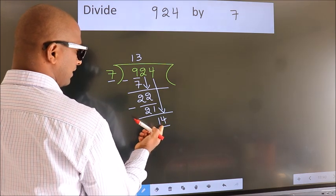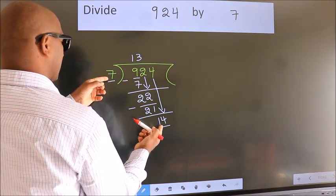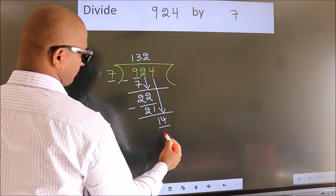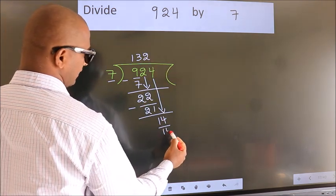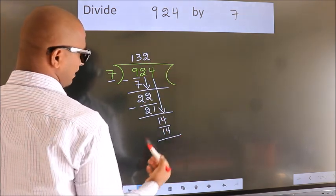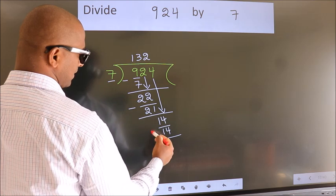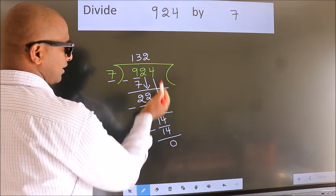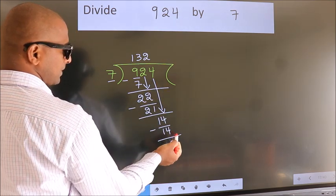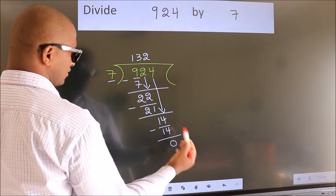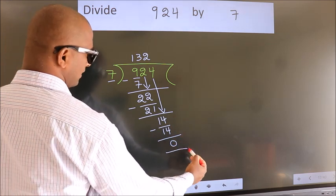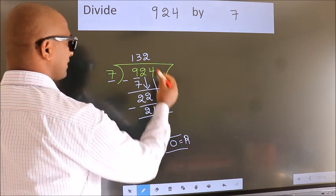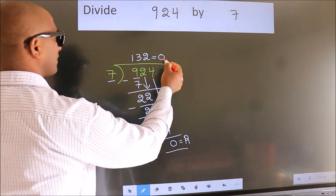When do we get 14 in the 7 table? 7 twos — 14. Now we subtract and we get 0. No more numbers to bring down, so we stop here. This is our remainder, and this is our quotient. See you again.